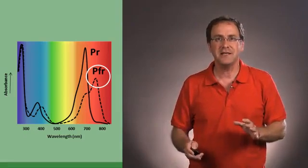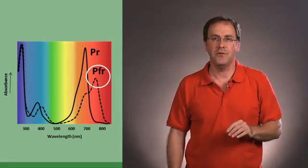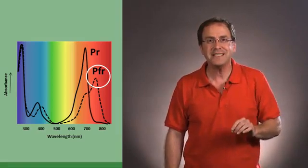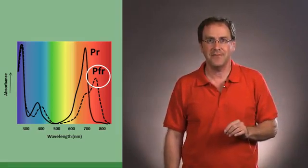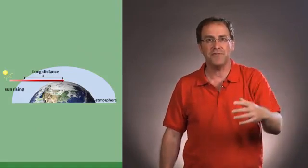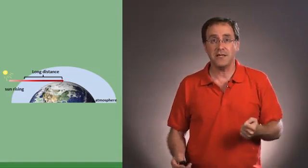Now what's important in this from an ecological point of view? When does a plant see red light and when does it see far red light? In the morning, as the sun is rising, the light waves have a longer path through the atmosphere. And under these conditions, there's more far red light than there is red light.